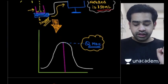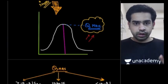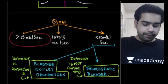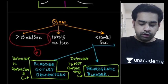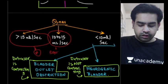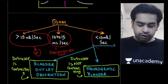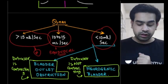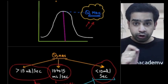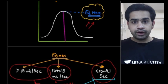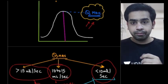The Q-max values: if Q-max is more than 15 ml per second, it is normal. If Q-max is between 10 to 15 ml per second, it is equivocal. If Q-max is less than 10 ml per second, the urine is not able to come out of the bladder. There are two main reasons for this — either there is an obstruction in the outflow tract, or the bladder is not contracting.